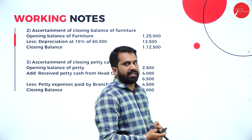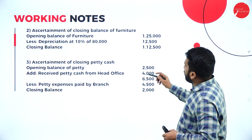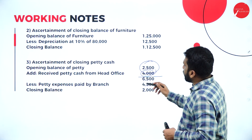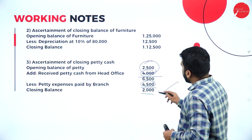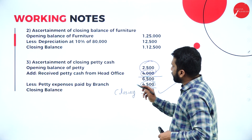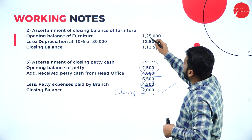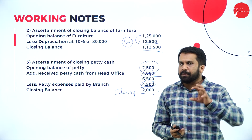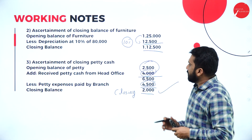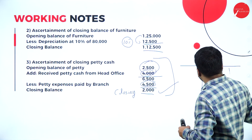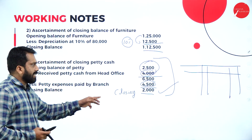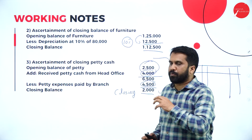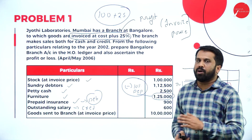For the petty cash working note: opening petty cash of 2,500 plus anything collected from head office — 4,000 — total 6,500. Out of that, 4,500 was spent, so the remaining 2,000 is the closing balance of petty cash. For furniture: opening balance of 1,25,000 minus 10% depreciation gives a closing balance of 1,12,500. These are the working notes — you can do petty cash in a format or separately.